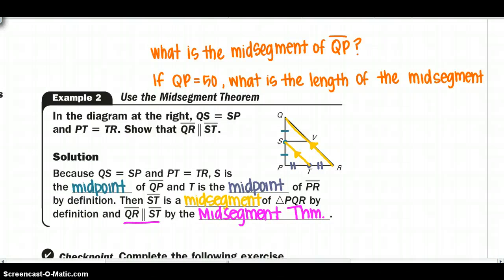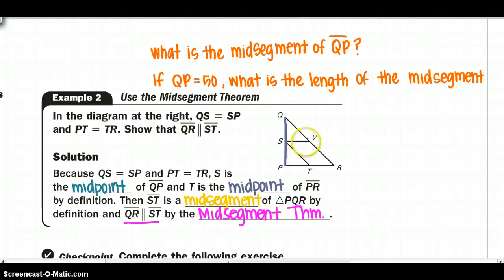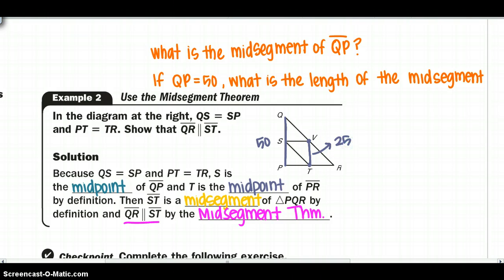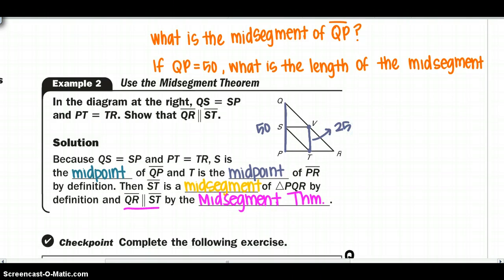Quick review: looking at side QP, what is the mid-segment opposite QP? If I connect the two midpoints, VT is the mid-segment opposite QP. If QP is 50, then VT is half of that, which is 25. Go ahead and stop the video and do checkpoint number two.